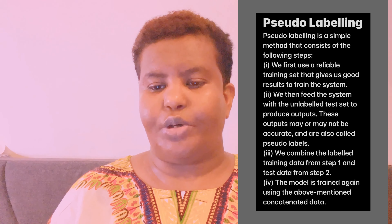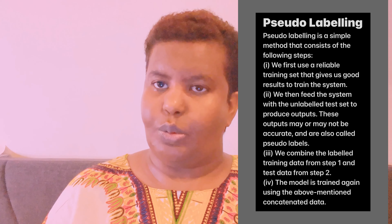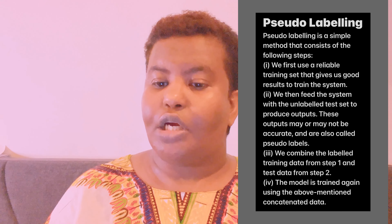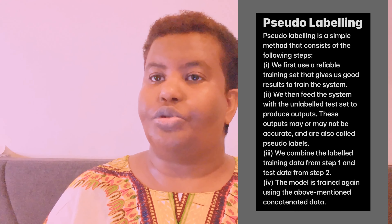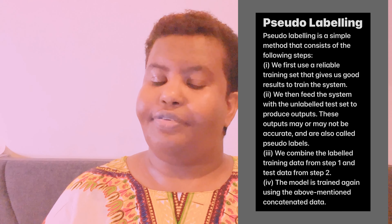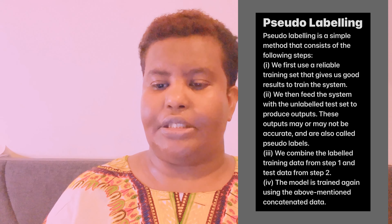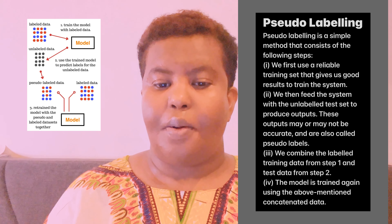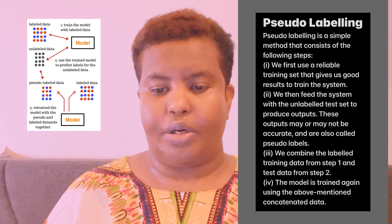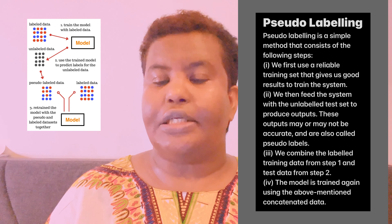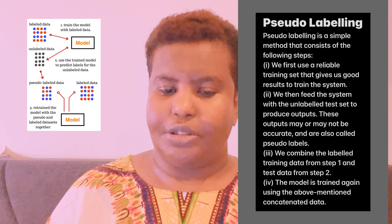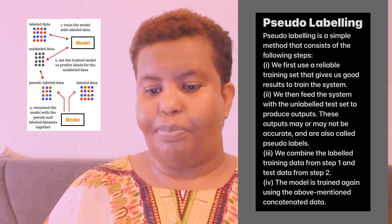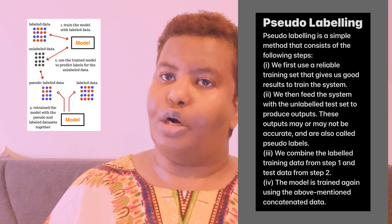Pseudo-labeling is a simple method that consists of the following steps. First, we use a reliable training set that gives us a good result to train the system. We then feed the system with the unlabeled test set to produce output. These outputs may or may not be accurate and are also called pseudo-labels. We then combine the labelled training data from step one and the test data from step two.